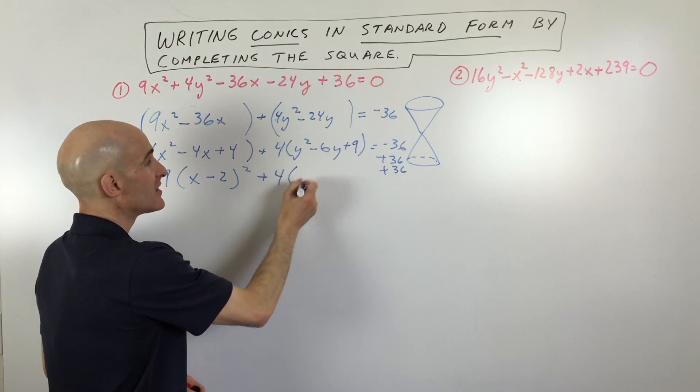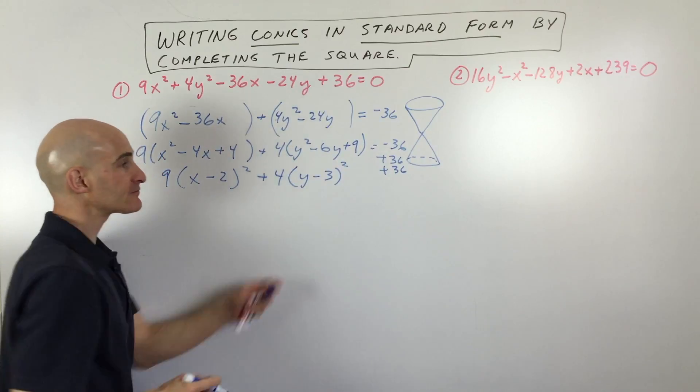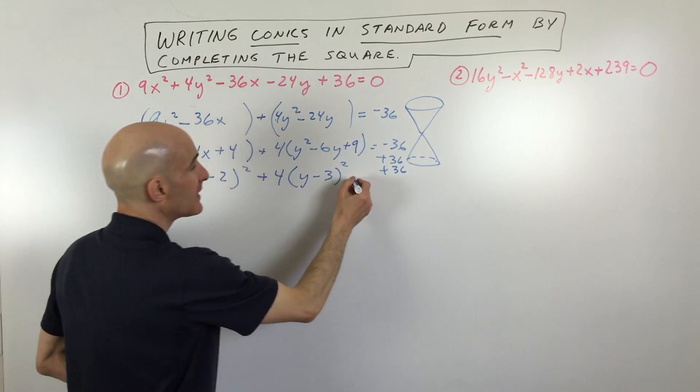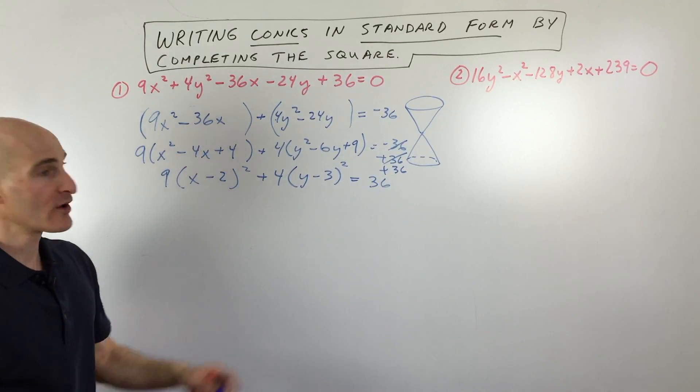What you can do is take half of negative 6. So that's going to be y minus 3, the quantity squared, equals these 36s cancel out and we're just left with 36.